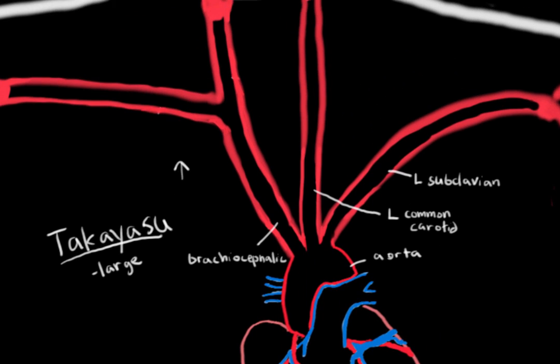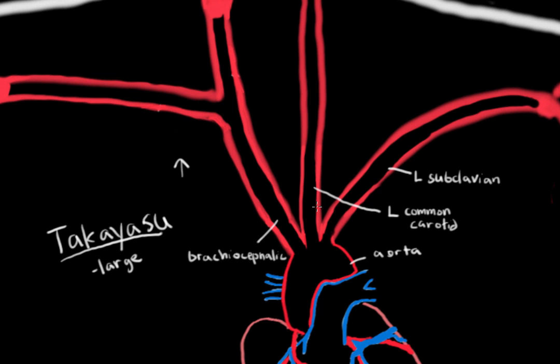Let's take a look a little bit further up. You can see this brachiocephalic artery branches into your right subclavian and your right common carotid. So what's happening in Takayasu Arteritis?